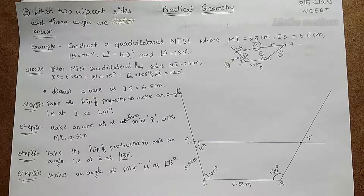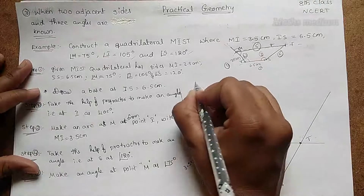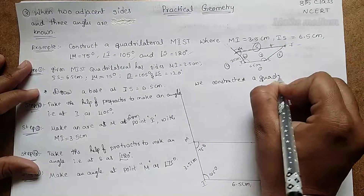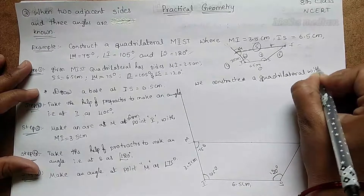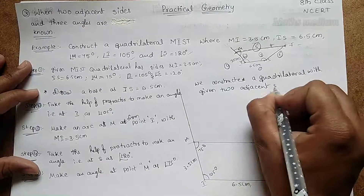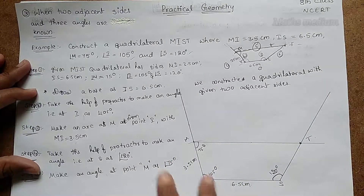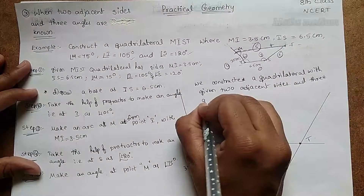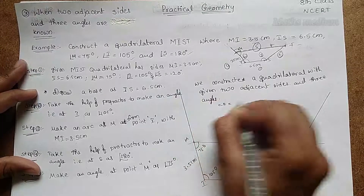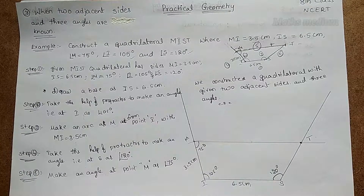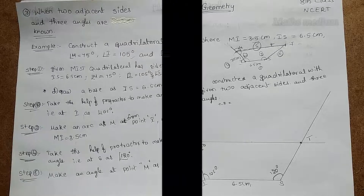This is point M, and the quadrilateral MIST is completed. We constructed a trapezium, which is the shape of this quadrilateral. Finally, we have constructed a quadrilateral with two adjacent sides MI and IS, and three angles. I hope you understand this session. If you have any doubts, comment in the comment box, click the like button, share my videos, and subscribe to my channel. Thank you!